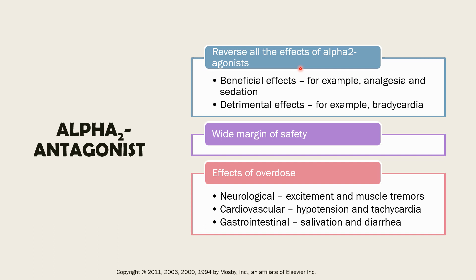Other detrimental effects that can be reversed by the antagonist, aside from bradycardia, include arrhythmia as well as hypotension. That is the beneficial scope of the alpha-2 antagonist.